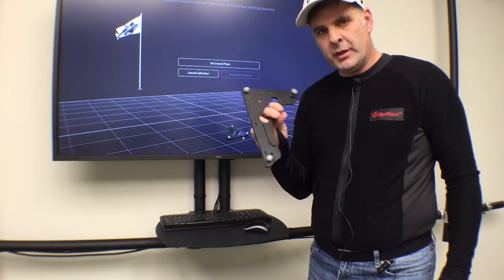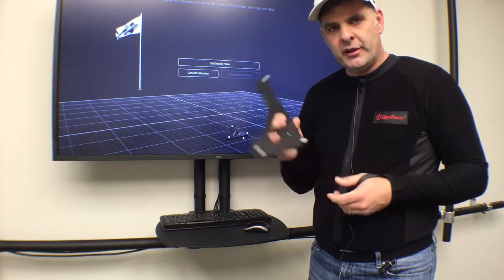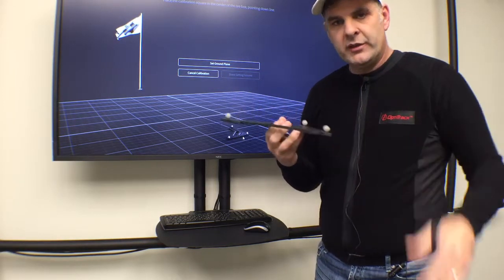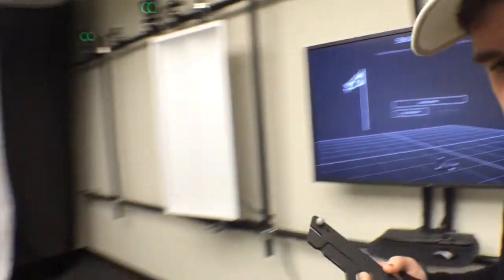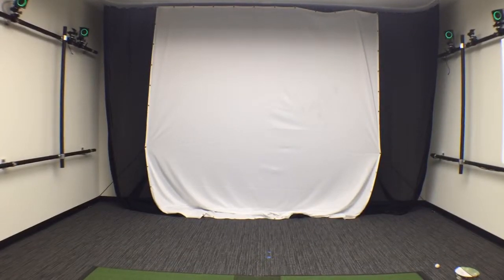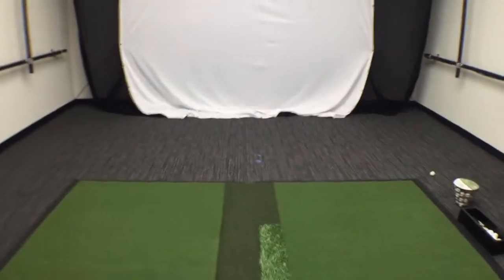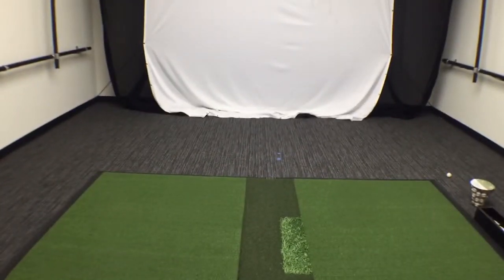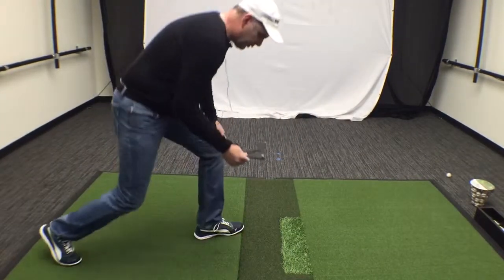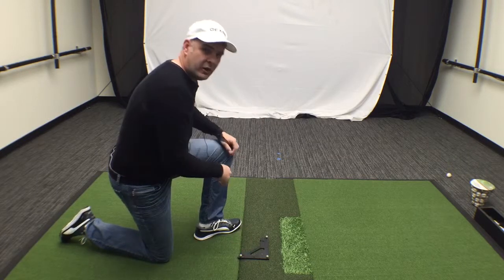Now you have to set the ground plane. This is the little device—everybody that has a Gears system has one of these things. This is how we know where zero is, how we know where the ground is. I'm going to kind of aim this camera down here, so I'll put that right there.